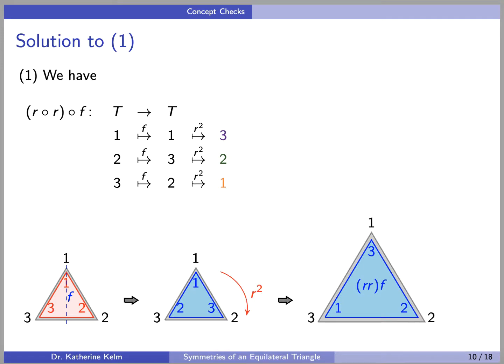Okay, so here is our first solution. So first, if we have R composed with R composed with F, notice we always do the last function first because we're composing functions, we do F, and then we do R composed with R, which is R squared. We send 1 to 3, 2 to 2, and 3 to 1.